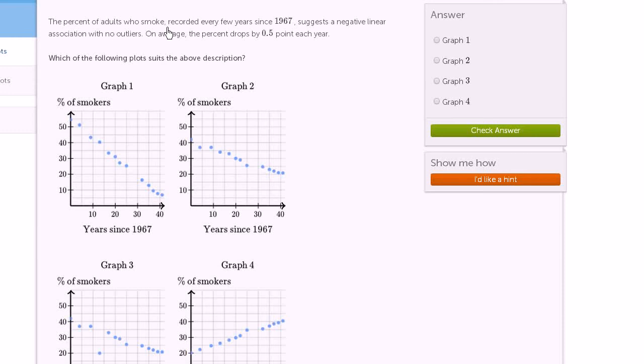The percent of adults who smoke recorded every few years since 1967 suggests a negative linear association with no outliers. On average, the percent drops by 0.5 points each year. Which of the following plots suits the above description?